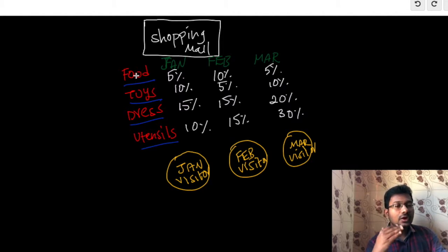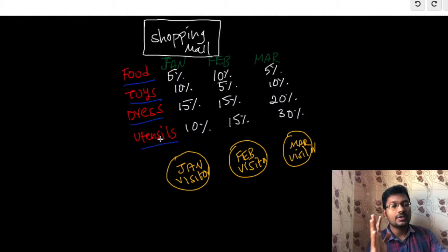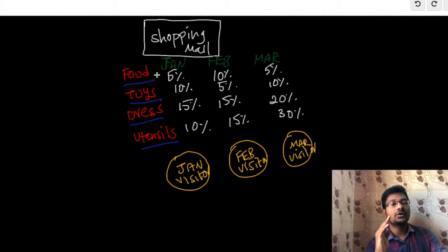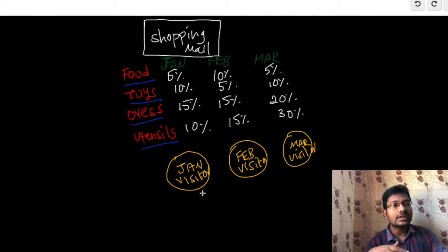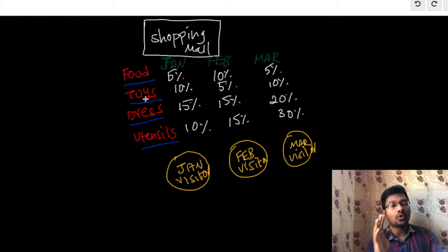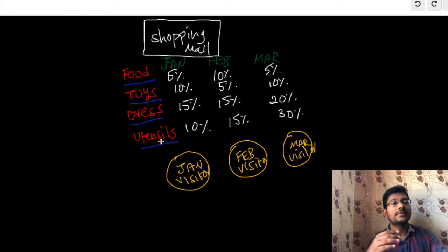Based on each element — food, toys, dress, utensils — the tax percentage for January month is handled by the visitors. These are the three visitors who are visiting the products or elements and they are determining or executing some algorithm.